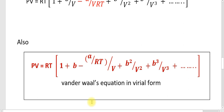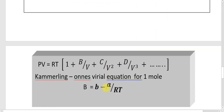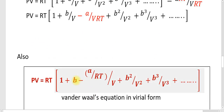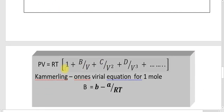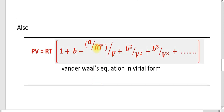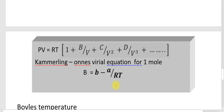This is the Van der Waals equation in the form of the virial equation. Comparing with the Kamerlingh-Onnes virial equation PV equals RT into (1 plus B/V plus C/V² plus D/V³ plus …), the second virial coefficient B equals B minus A by RT, where B is the Van der Waals volume correction constant and A is the pressure correction constant.